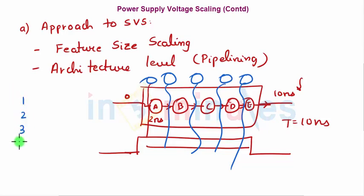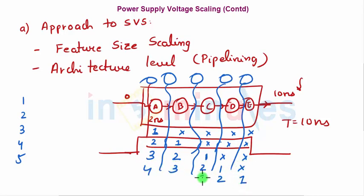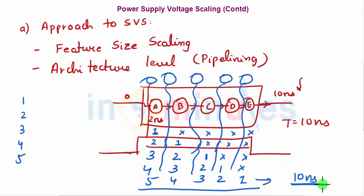Each stage takes two nanoseconds to complete its computation. With five tasks: at the start, task one goes to stage A while the others are idle. After two nanoseconds, task one goes to B and task two goes to A. After four nanoseconds, task one is at C, task two at B, task three at A. This continues until after ten nanoseconds all five stages are occupied with tasks one through five respectively.